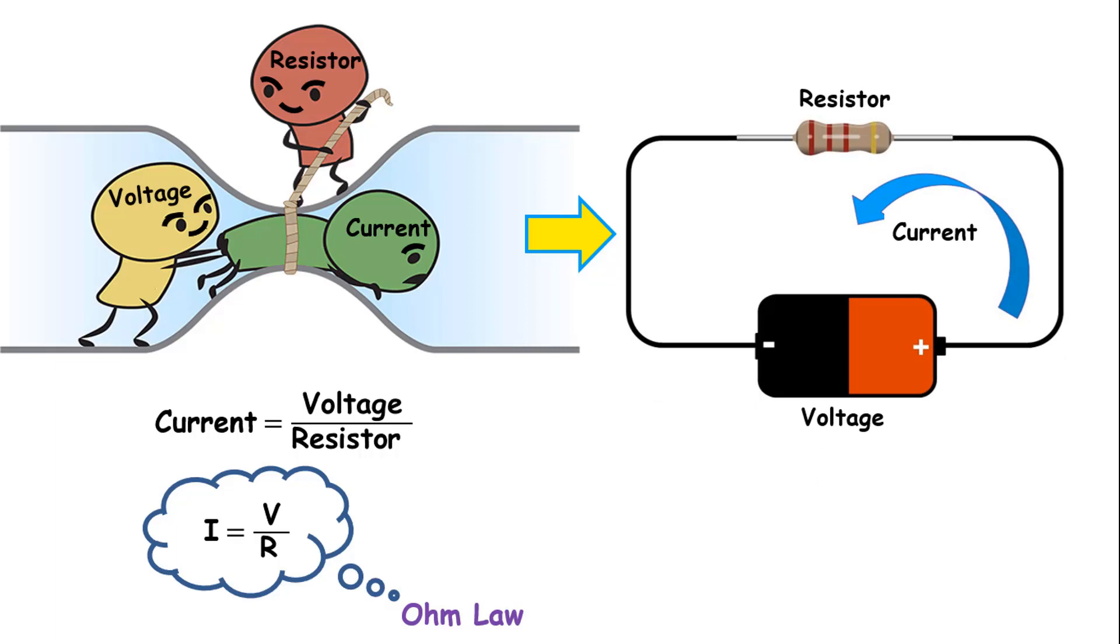There is a current equal voltage divided by resistance relationship between the three of them. If we show them in letters, I equal V divided by R. This ratio between the three is Ohm's law.